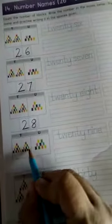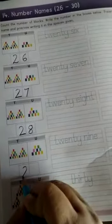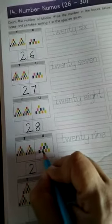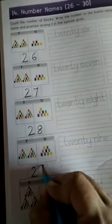Now 1 ten, 2 tens, and 1, 2, 3, 4, 5, 6, 7, 8, 9. This is 9. 2 tens and 9, 29.